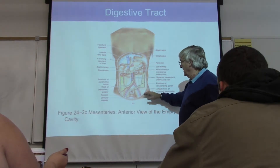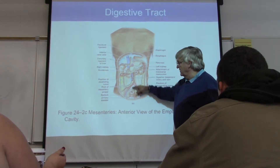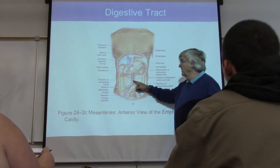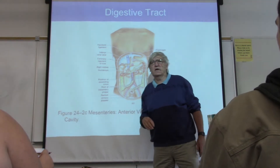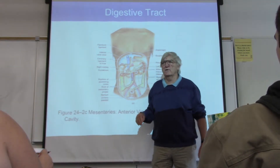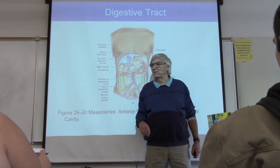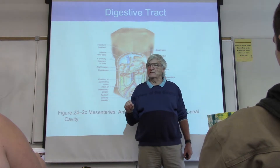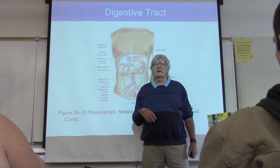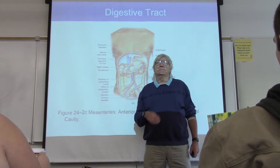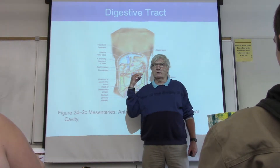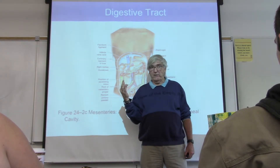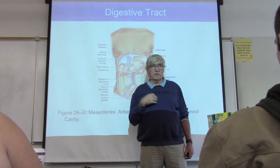Here are the blood vessels that come into the intestine mainly. What's the name of that artery? The SMA, the superior mesenteric artery. The superior mesenteric artery is one of the three unpaired arteries coming off the aorta.